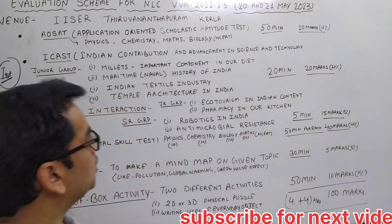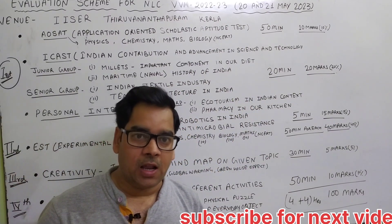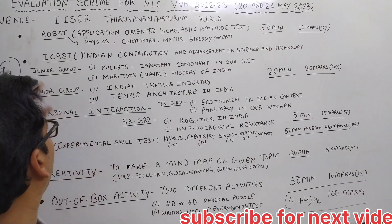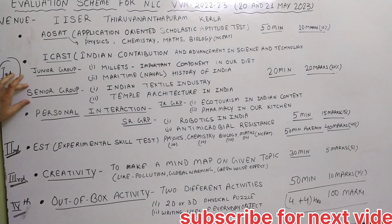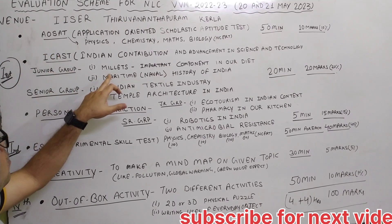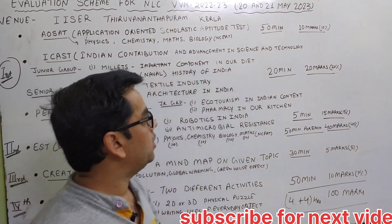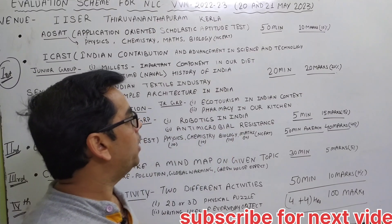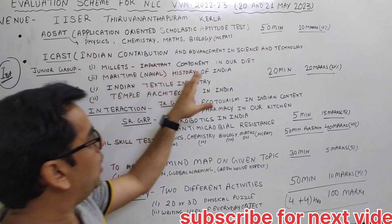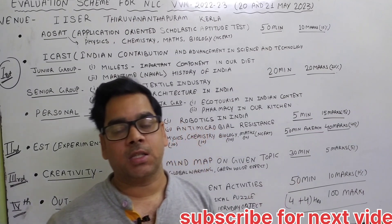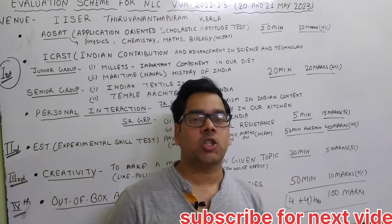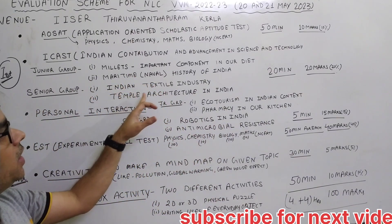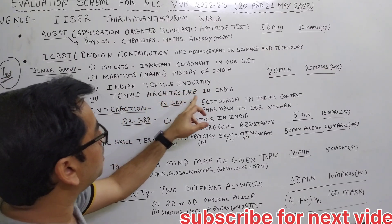The second category is ICAST — Indian Contribution and Advancement in Science and Technology — which is also the same as in the state level camp. Topics are given separately for junior and senior groups. For the junior group, the topics are: millets as an important component in our diet, and the maritime and naval history of India. Details of these topics are given in an excerpt and will be discussed in the next videos.